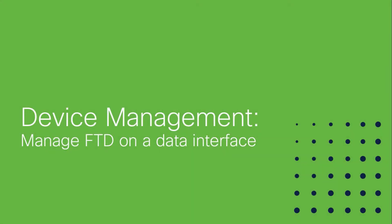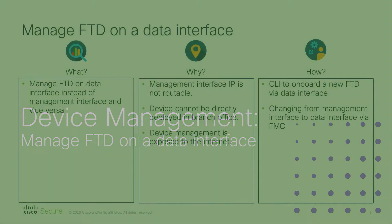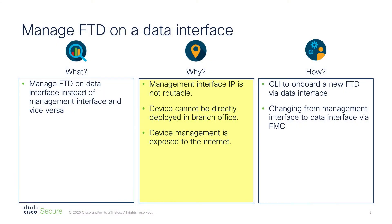In this video, I'll talk about the device management feature which allows network administrators to use any data interface to manage the FTD device through that interface. In branch offices where FMC is remote to the FTD, where FTD might be an edge device, the management interface needs to be routed through NAT, for which you need an additional edge device.